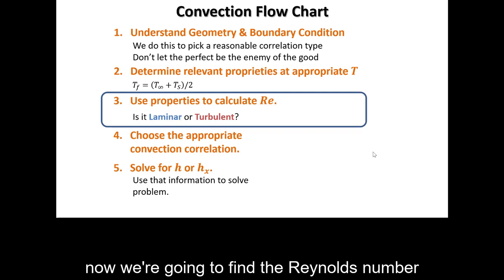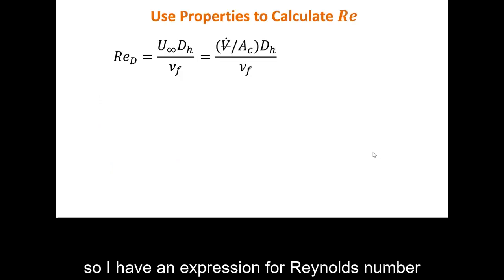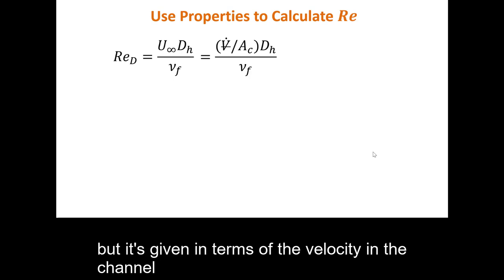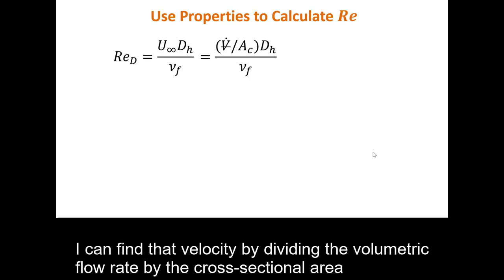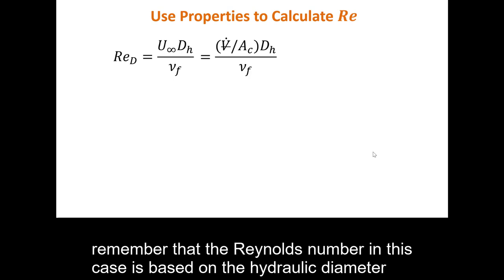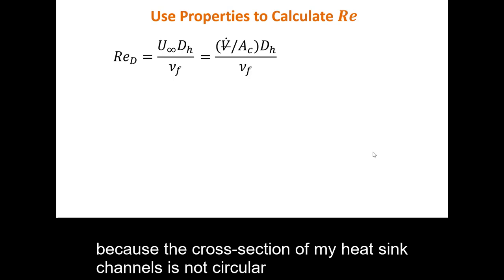Now, we're going to find the Reynolds number. So, I have an expression for Reynolds number, but it's given in terms of the velocity in the channel. I can find that velocity by dividing the volumetric flow rate by the cross sectional area. Remember that the Reynolds number in this case is based on the hydraulic diameter because the cross section of my heat sink channels is not circular.